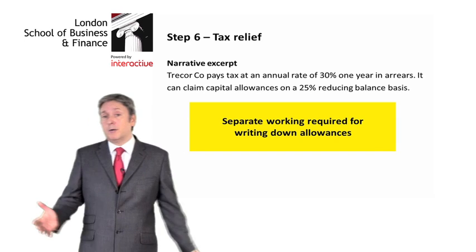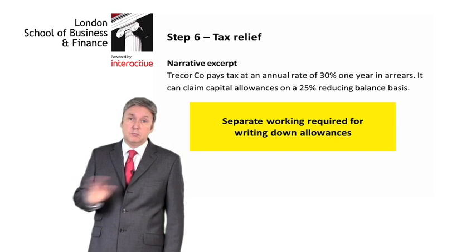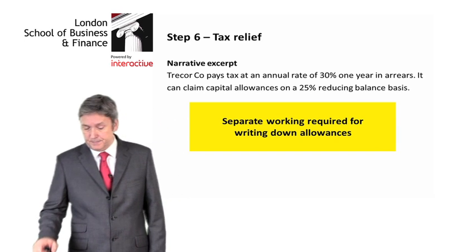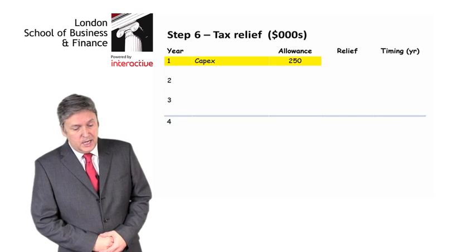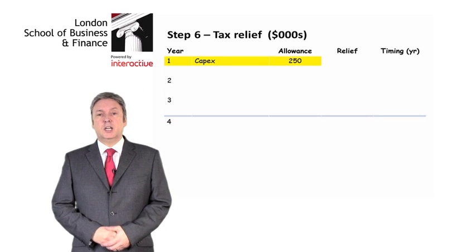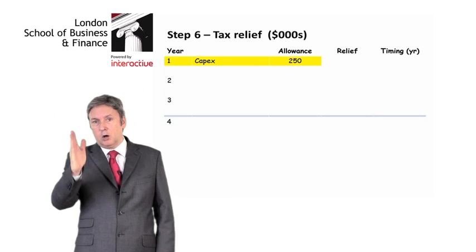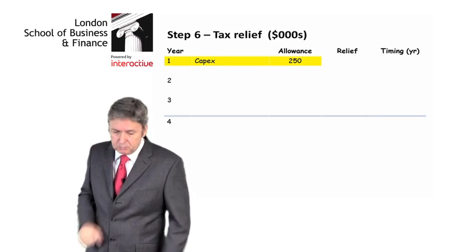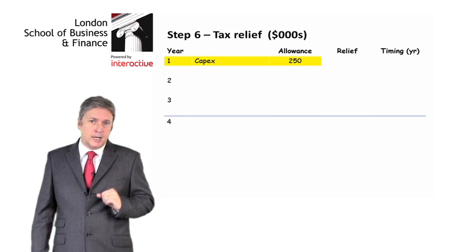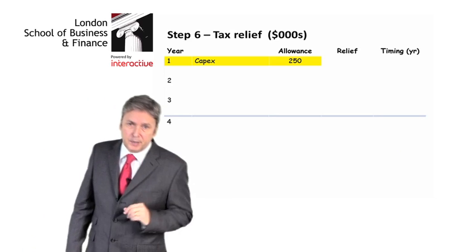All I would say is we want a separate working — nothing more than that. Here is my working. We've got our tax relief table with a column for years, a column for description, a column for the allowance, a column for relief, and a column for timing.